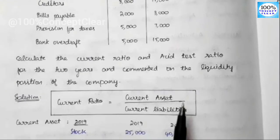Current asset items include: debtors, stock, bills receivable, bank and cash balance, prepaid expenses, income due (outstanding income), and short-term investment. These are the current assets. Current liabilities include: creditors, bank overdraft, bills payable, outstanding expenses, and income received in advance.